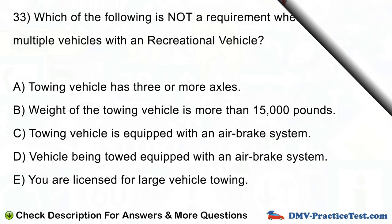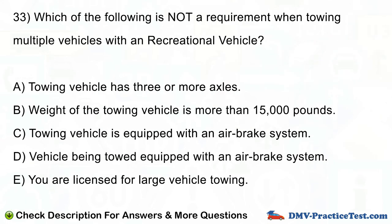Question number 33. Which of the following is not a requirement when towing multiple vehicles with a recreational vehicle? A. Towing vehicle has three or more axles. B. Weight of the towing vehicle is more than 15,000 pounds. C. Towing vehicle is equipped with an airbrake system. D. Vehicle being towed equipped with an airbrake system. E. You are licensed for large vehicle towing.